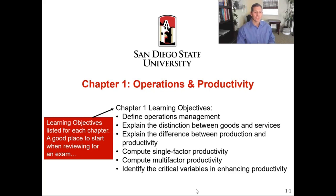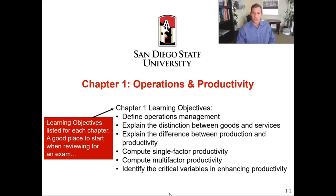For Chapter One, our first objective is to define operations management, and we will also discuss production. Then we will explain the distinction between goods and services, explain the difference between production and productivity, compute single-factor and multi-factor productivity, and identify the critical variables in enhancing productivity. Lastly, we will go over the historical evolution of operations and supply chain management. Those are our learning objectives for Chapter One.